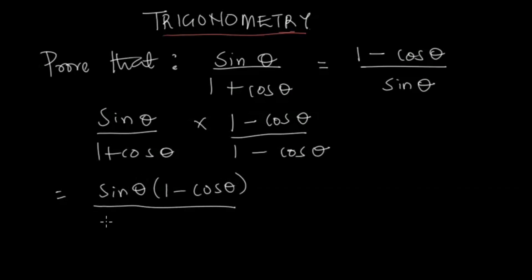...1 plus cos θ, 1 minus cos θ. So that will be equal to sin θ into 1 minus cos θ, all over. Now we're having 1 plus cos θ, 1 minus cos θ.